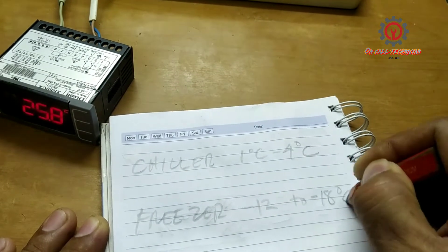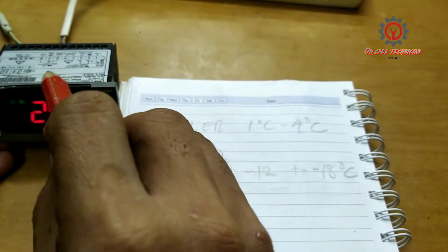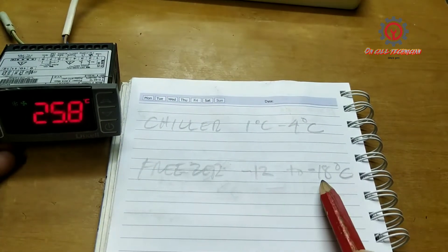Now the currently installed value for this is the freezer setting, which is negative 12 to negative 18 degrees Celsius.